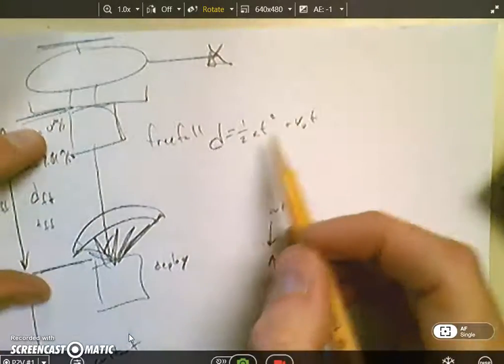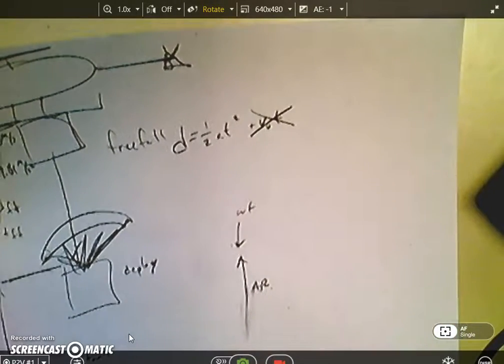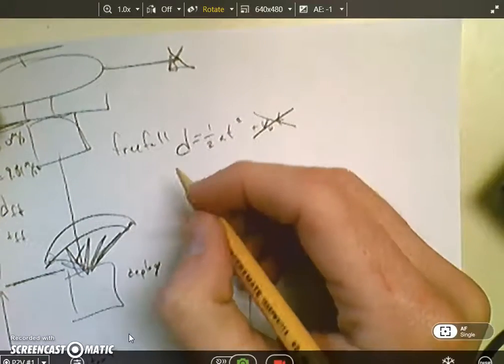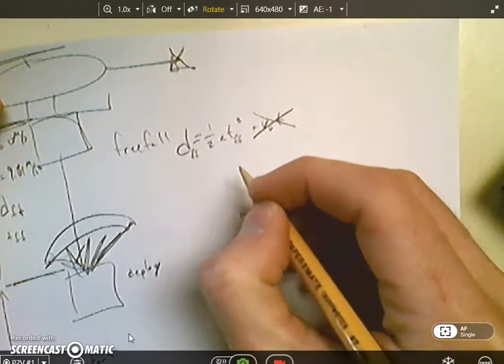However your initial velocity is zero so this term is canceled out. I'm not going to go through the derivation of this but just trust me on it. This is your free fall distance and this is the free fall time that it takes.